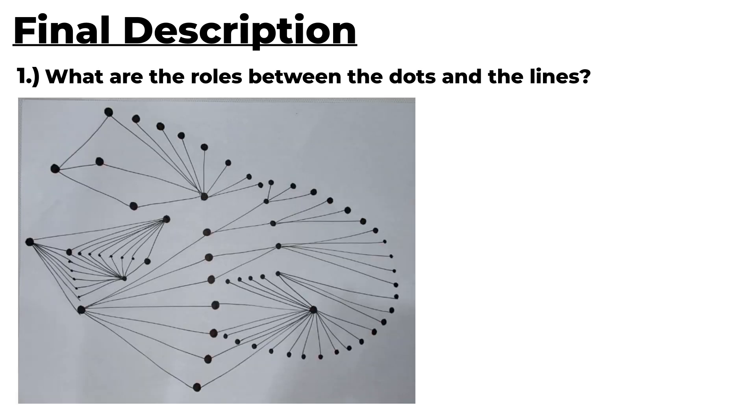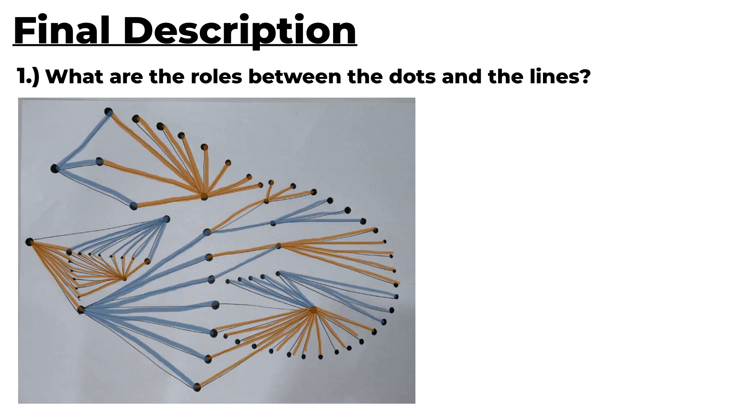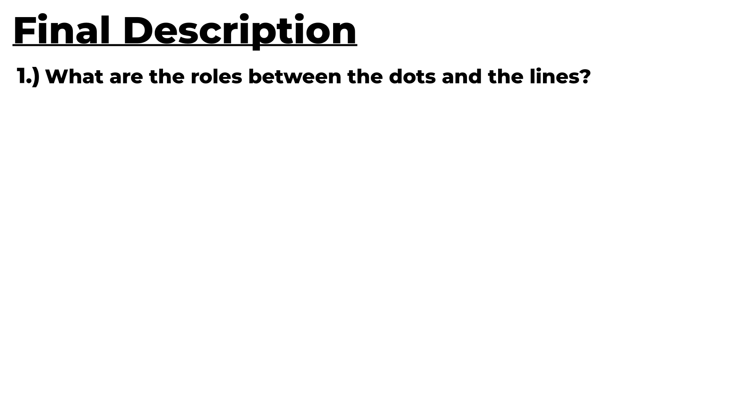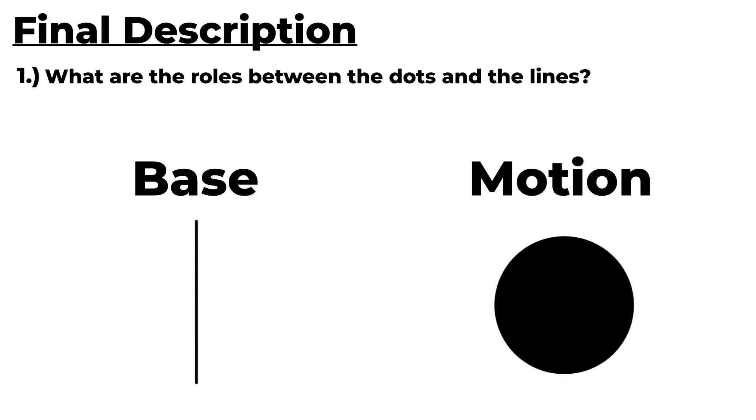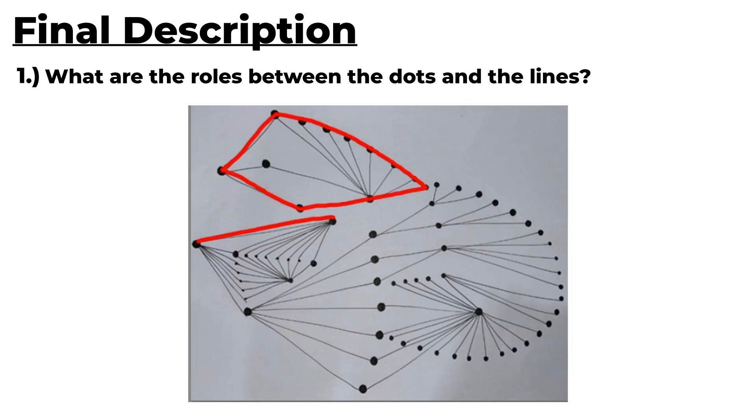Week 2 of Friday. And now it's time for the final description. As for the first question, what are the roles between the dots and the lines? The dots serve as the foundation while lines represent motion along our path. You might be wondering what happens if the roles will reverse. If the lines were the base, they'd form shapes by connecting with other lines.